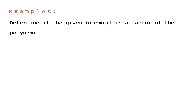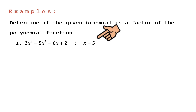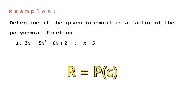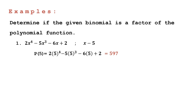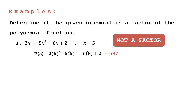For the first example, we have 2x⁴ minus 5x³ minus 6x plus 2 divided by x minus 5. We will determine if this divisor is a factor or not. Using the remainder theorem, we substitute x equals 5 and simplify. The remainder is equal to 597. Therefore, x minus 5 is not a factor of the given polynomial function.